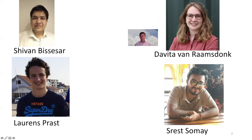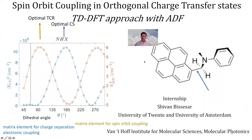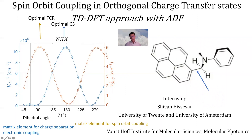This is, of course, extremely important for sustainable society, but also for photomedicine. We'll start with what happens with the charge separation and the spin-orbit coupling if we twist around a single bond. Specifically, what will happen to the matrix element for charge separation, as well as the matrix element for spin-orbit coupling, for this pyrene dimethyl aniline molecule in N-hexane as a solvent?